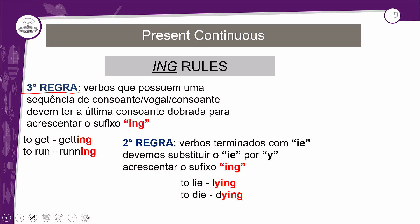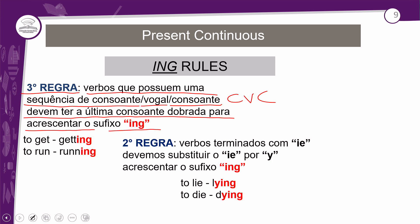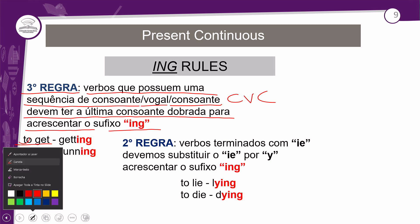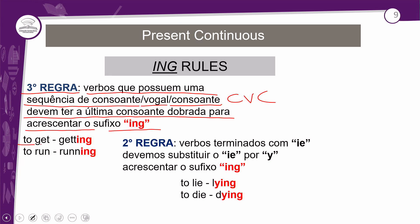A terceira regra: verbos que possuem uma sequência consoante-vogal-consoante (CVC) — como vocês viram na aula passada — devem ter a última consoante dobrada para acrescentar o sufixo -ing. Como as palavras to get e to run são monossílabas, todas as sílabas são tônicas por si só. Exemplos: to get → getting; to run → running. Perceba que a última consoante foi dobrada.